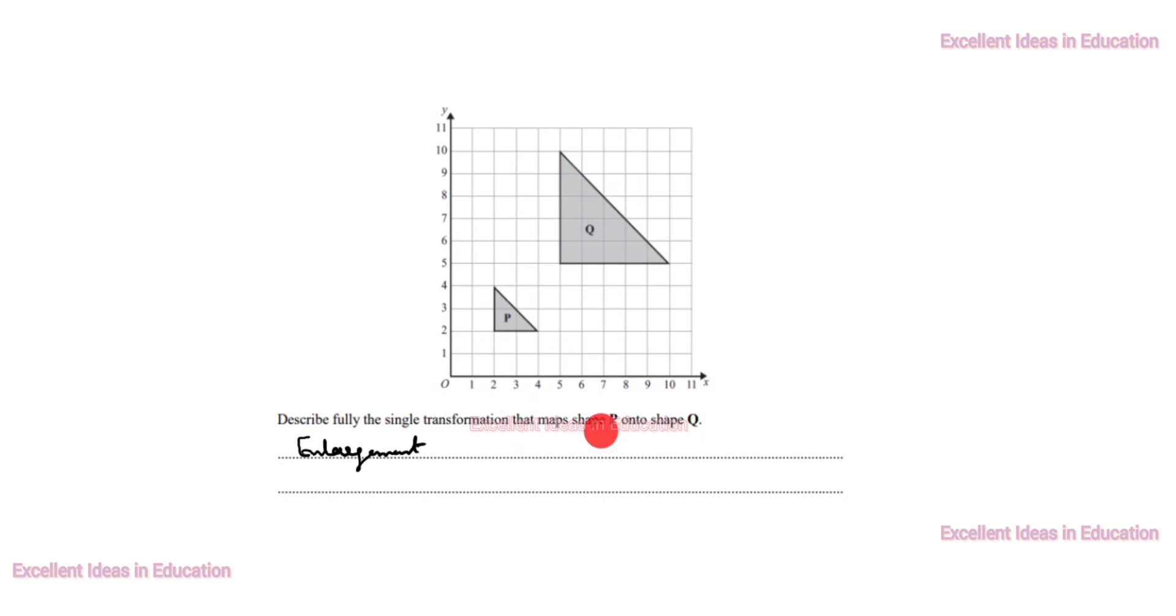After that, shape P onto shape Q. Now we will join the line. First, we will take this as A, B, C. This one is A dash, B dash, C dash.